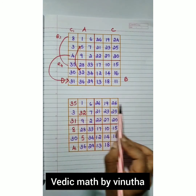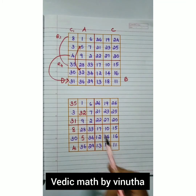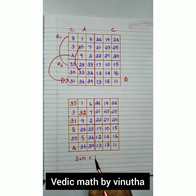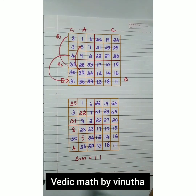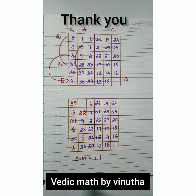Now you can add row-wise, column-wise, or diagonal-wise — you will get the sum equal to 111. Similarly, you can use any consecutive numbers or multiples of any number to create a 6x6 magic square easily. Thank you for watching my video, please subscribe to my channel, and have a nice day.